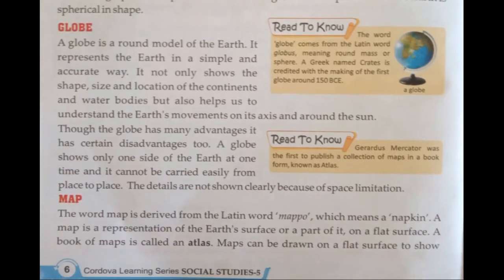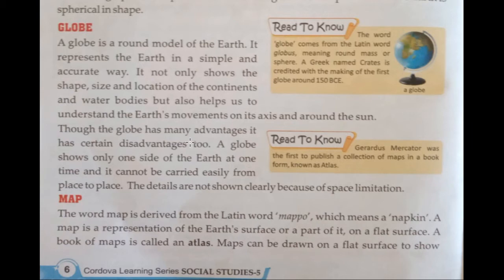A globe is a round model of the Earth. It represents the Earth in a simple and accurate way. It not only shows the shape, size, and location of the continents and water bodies, but also helps us understand the Earth's movement on its axis and around the Sun. Though the globe has many advantages, it has certain disadvantages too. A globe shows only one side of the Earth at one time, it cannot be carried easily from place to place, and details are not shown clearly because of space limitation.